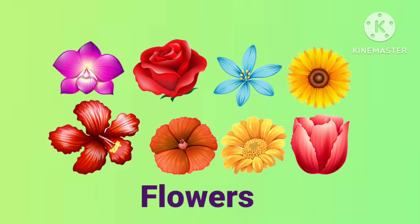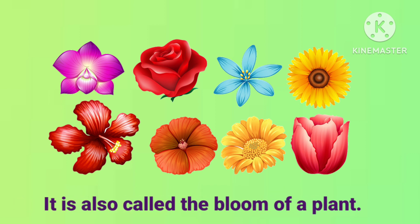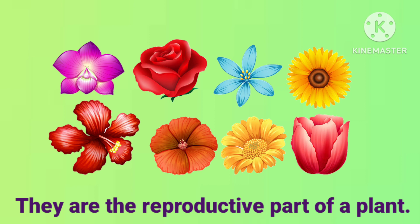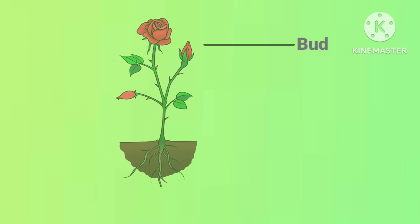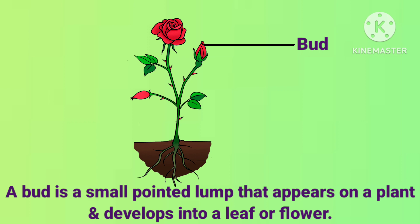Next it is flowers. Flowers are the most beautiful and attractive part of a plant. They are also called the bloom of a plant. Flowers come in different colors, shapes and smells. They are the reproductive part of a plant. A bud is a small pointed lump that appears on a plant and develops into a leaf or flower.